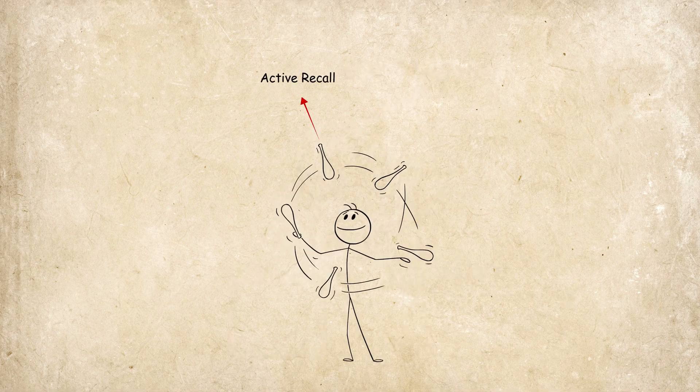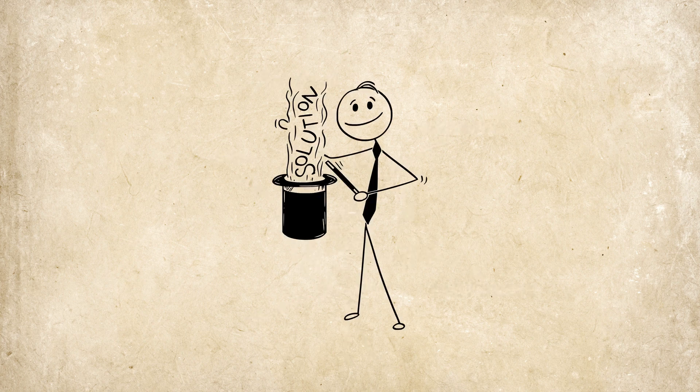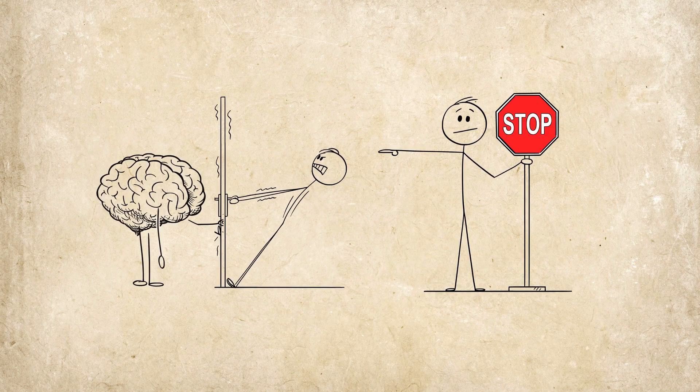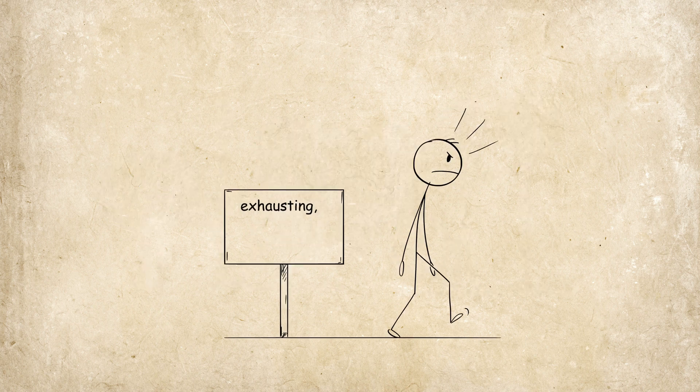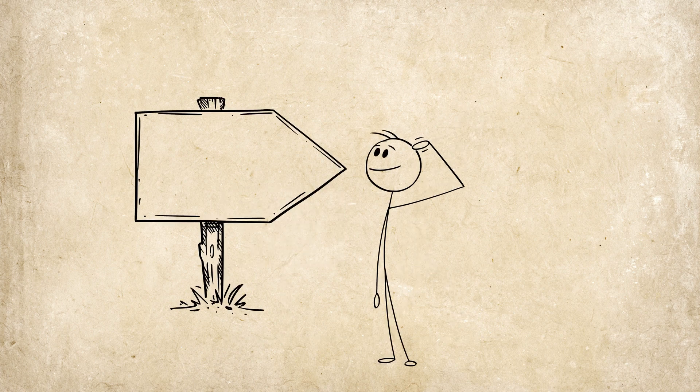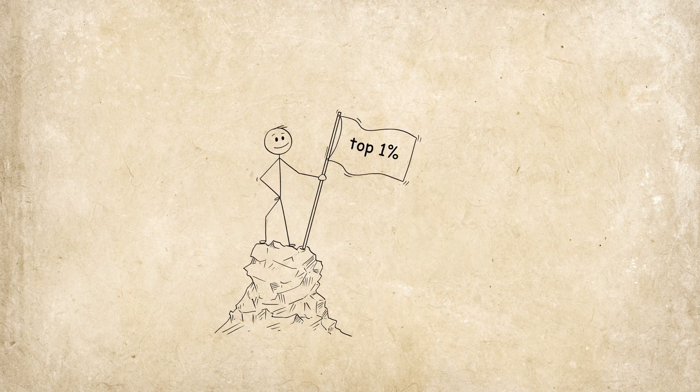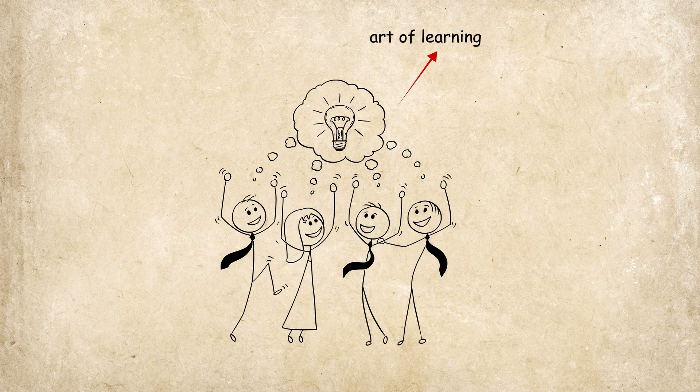These five methods—active recall, the Kumon method, spaced repetition, Kaizen, and Shu—are not isolated tricks. They are a holistic system for learning. You stop fighting your brain's natural tendencies and start working with them. You replace exhausting, ineffective cramming with smart, sustainable habits. This is the fundamental difference. The top 1% of learners aren't born with better brains. They have simply mastered the art of learning itself.